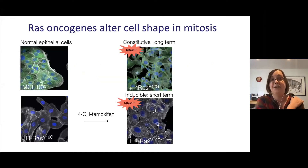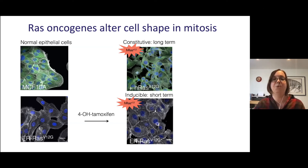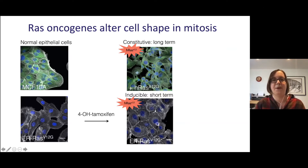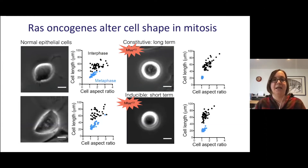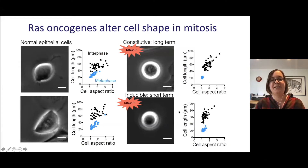To investigate this, we looked at RAS oncogenes — most data shown uses HRAS, but we get similar results with oncogenic KRAS mutations. Our model system uses normal non-transformed epithelial cells where RAS can be turned on inducibly using an estrogen-receptor-fused oncogenic KRAS, and we also have a long-term KRAS expression model. We find that turning RAS on — both short-term and long-term — affects cell shape: cells round up more in mitosis. Interphase cell aspect ratios show no difference, whereas mitotic rounding is increased when RAS is activated.